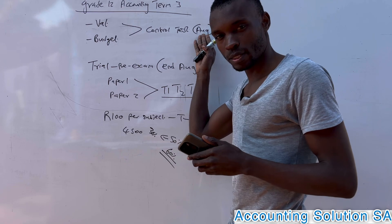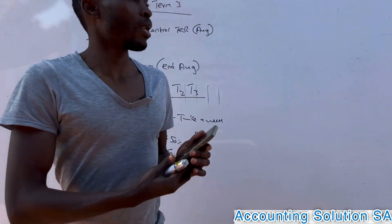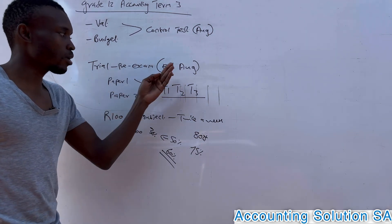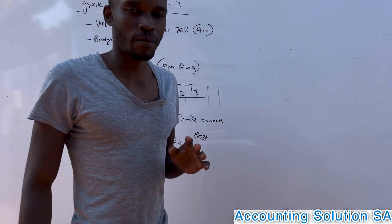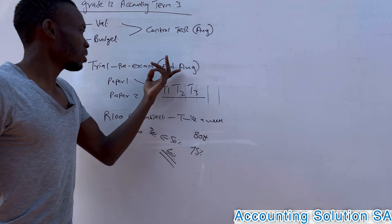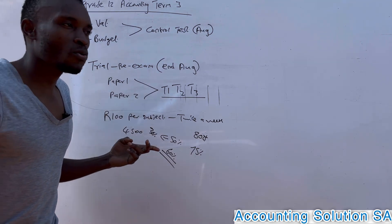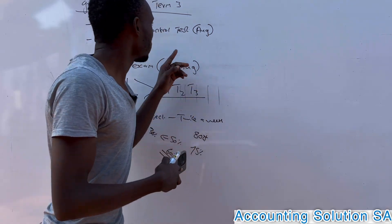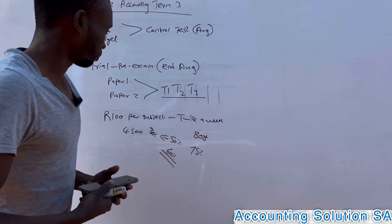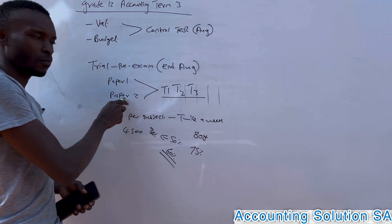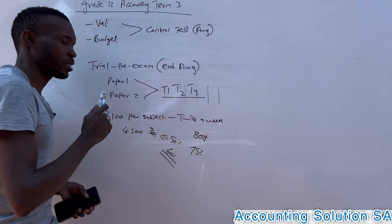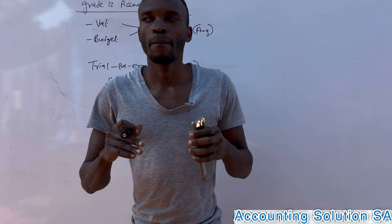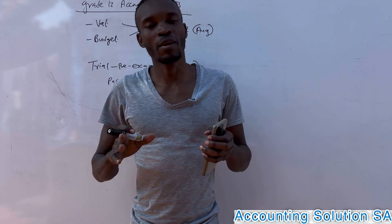After that you are going to write a control test around August, and then you are going to write what we call the trial examination at the end of August or beginning of September. When you write your trial exam, it covers the whole textbook — from the general work right through to what you covered in Term 3. You are going to write Paper 1 and Paper 2, including all three terms, which means you are going to write everything.